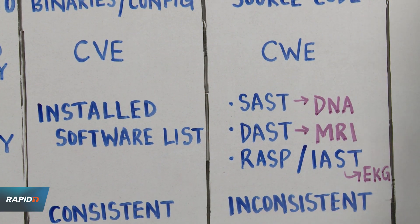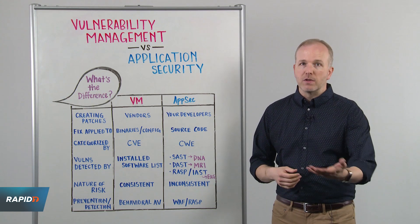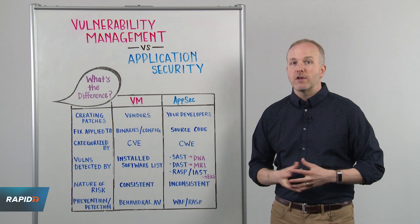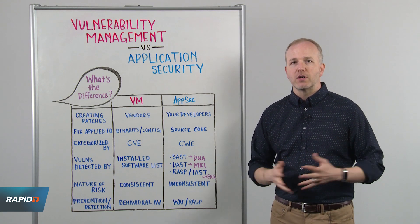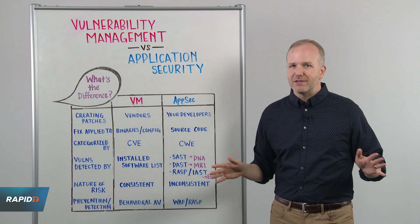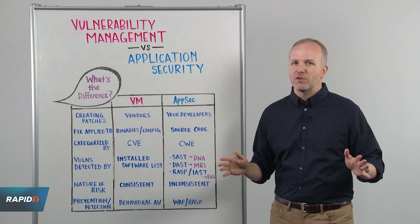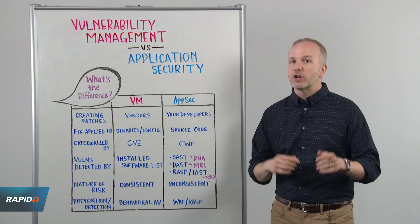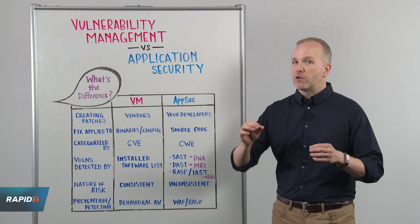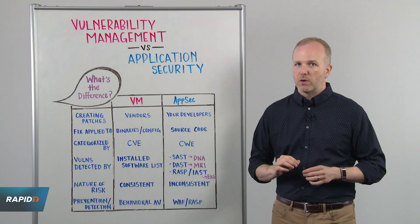CWEs are general categories of vulnerabilities that haven't been discovered yet, like the ones on your company's website, such as SQL injection. CWEs require a completely separate remediation process, where your company's developers will need to fix their own source code.